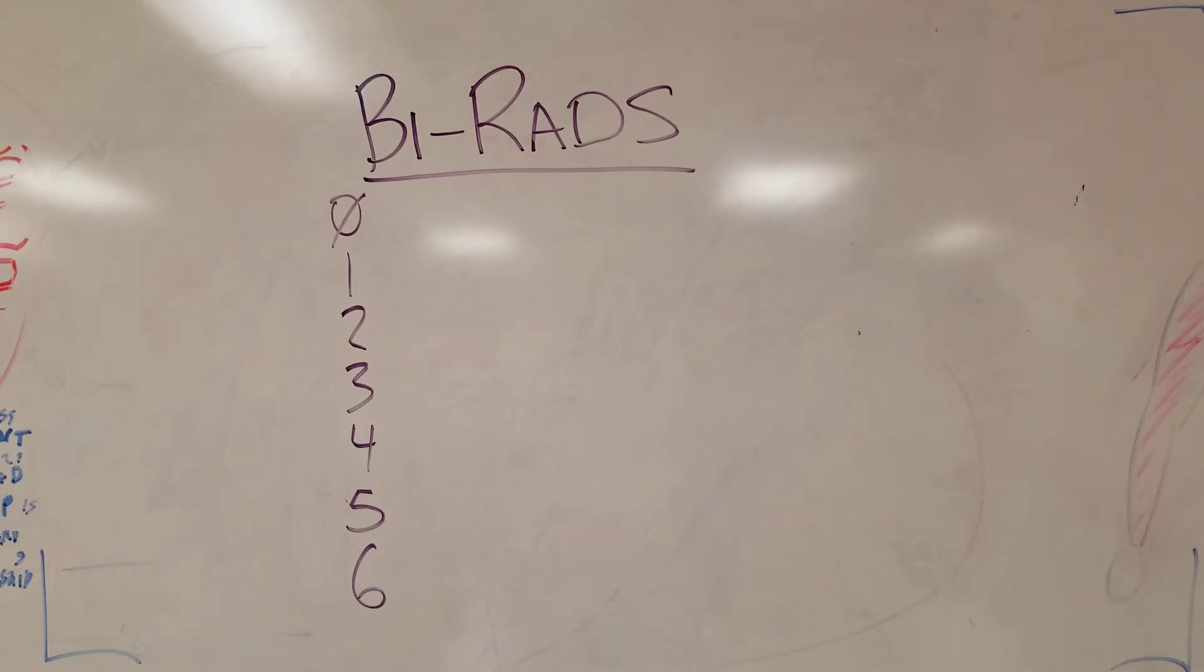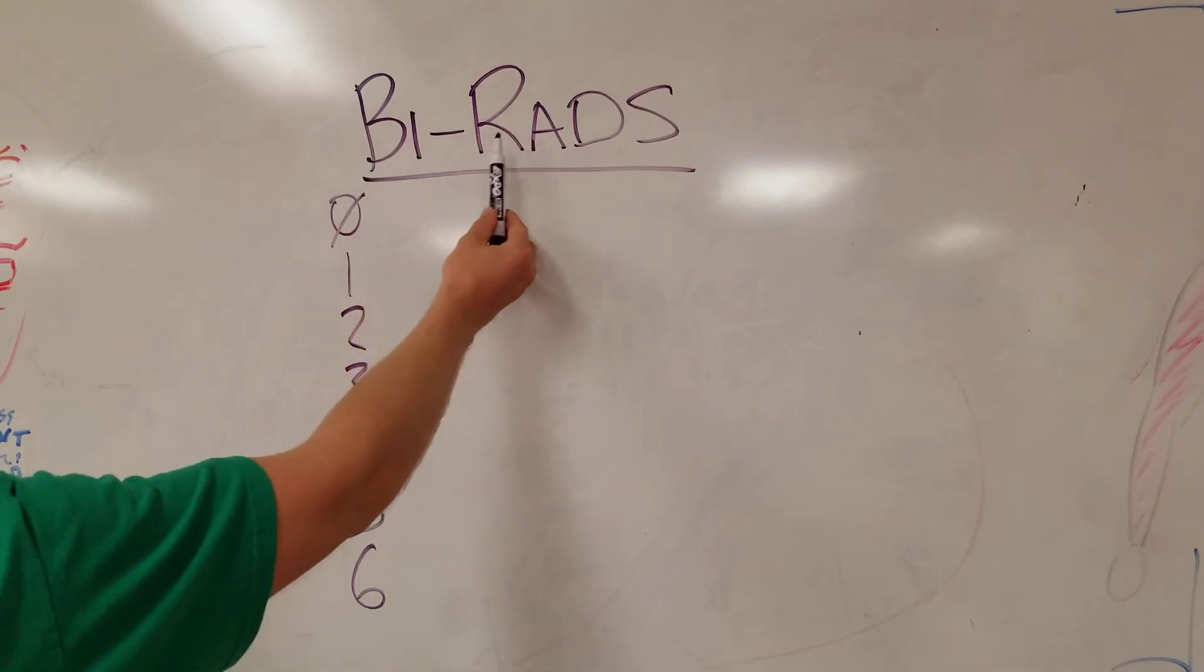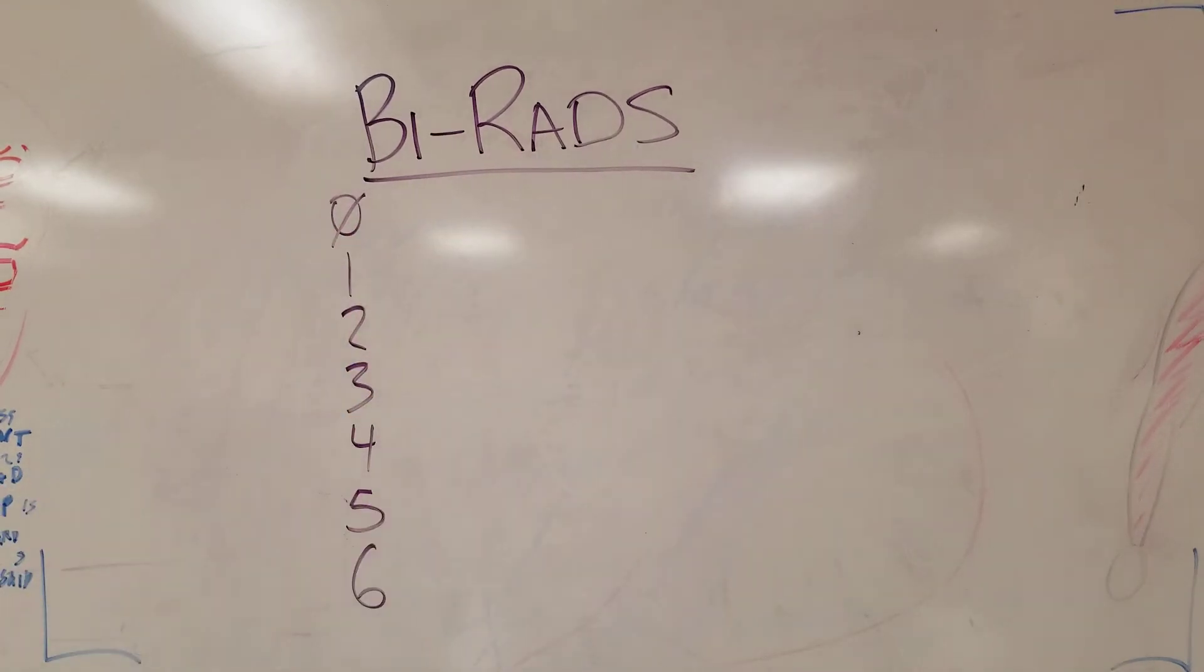First of all, BI-RADS stands for the Breast Imaging Reporting and Data System, and it goes from zero to six. We'll work backwards or work from hours in because it's easier to memorize that way.